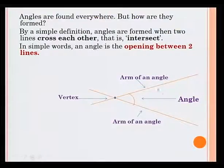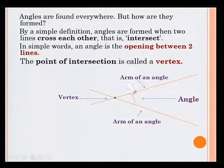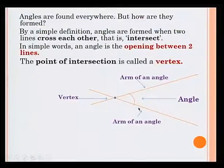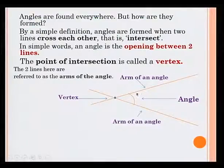Let's have a look at this drawing. There are two lines that intersect. The point of intersection is called a vertex. These two lines are referred to as the arms of the angle. The opening between these two lines is the angle.